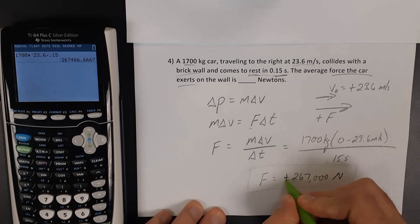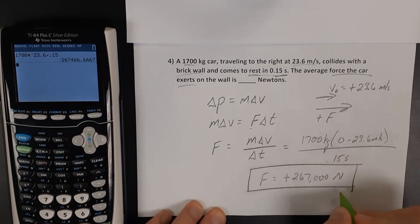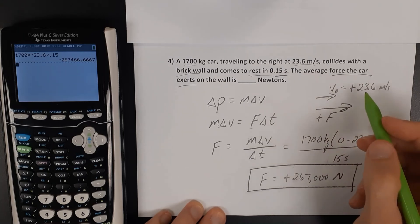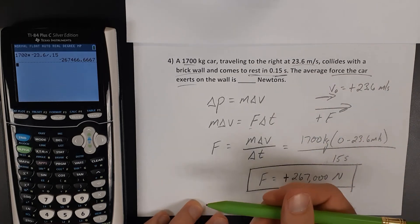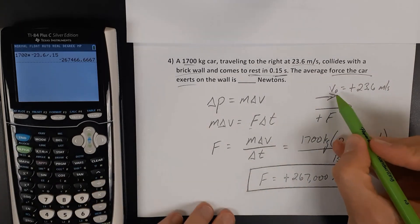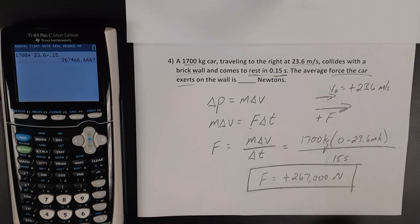So Newton's third law says these are going to be equal but opposite forces. The wall exerted the negative force, the car going in the positive direction exerts the positive force.